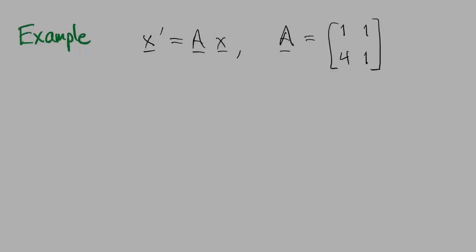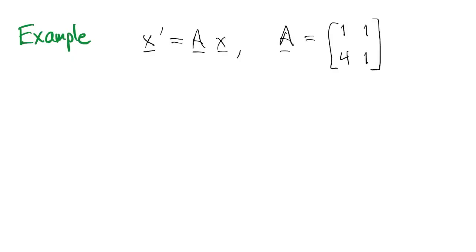Here's an example of a constant coefficient system of dimension 2. I'll remind you how to find the eigenvalues and eigenvectors. This is just like from the first chapter, so you can skip ahead if you feel comfortable with that already, but here it is.